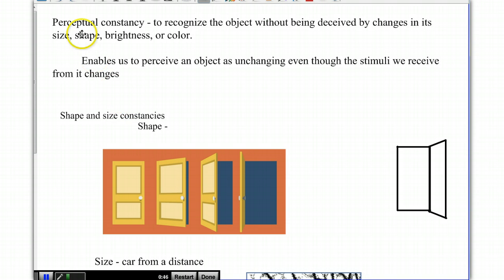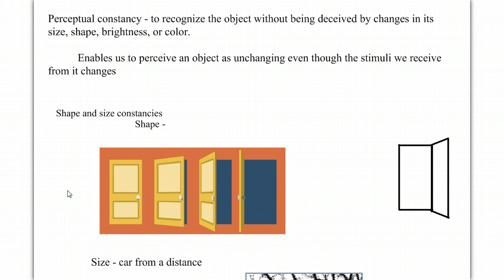Let's start with the concept of perceptual constancy. This is our ability to recognize the object without being deceived by its changes in size, shape, brightness, or color.